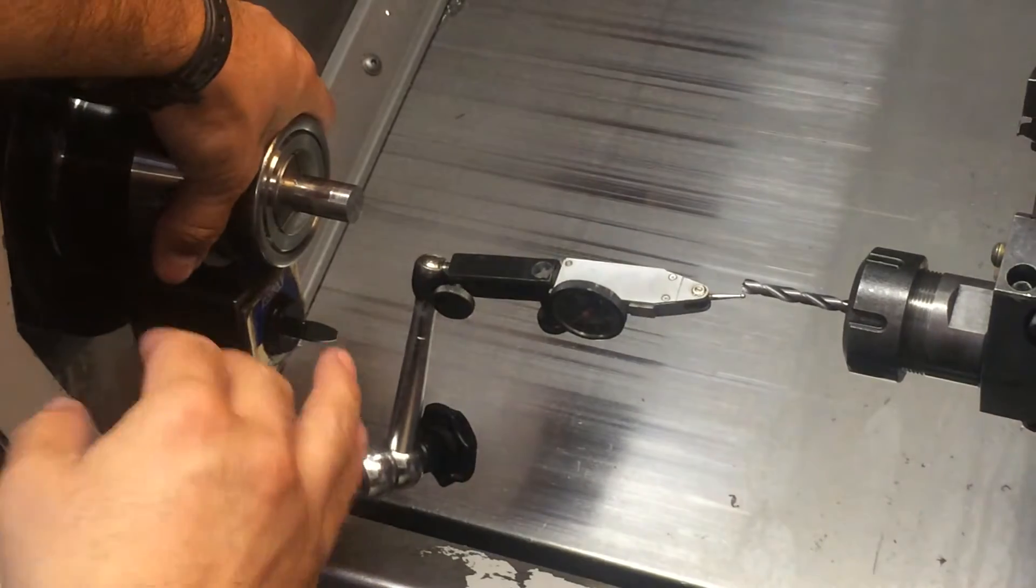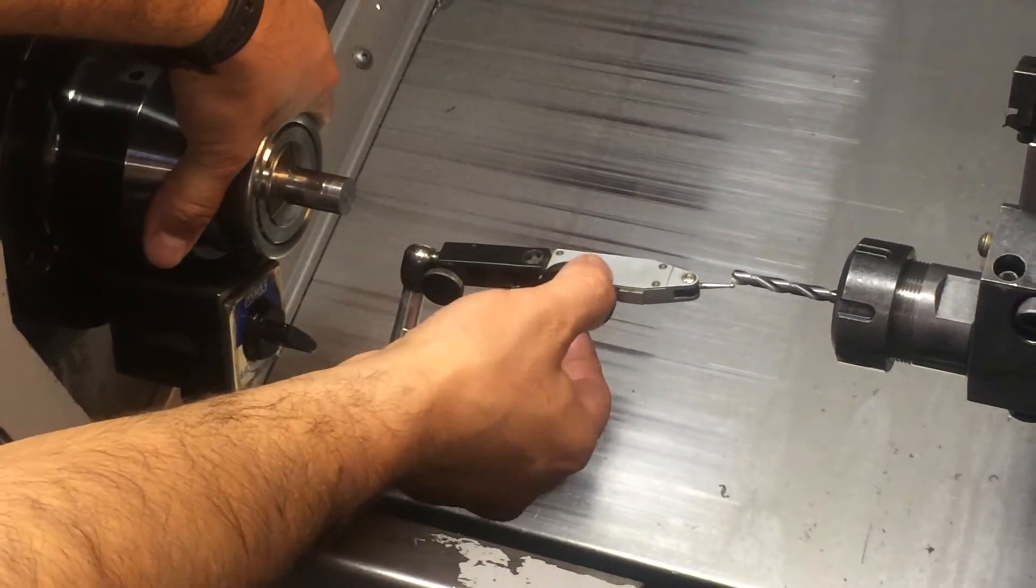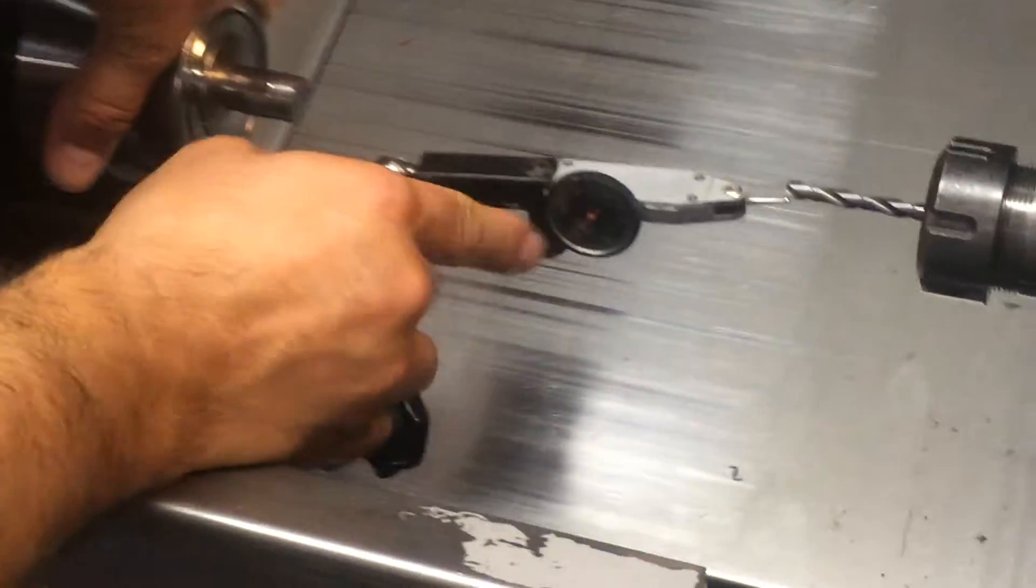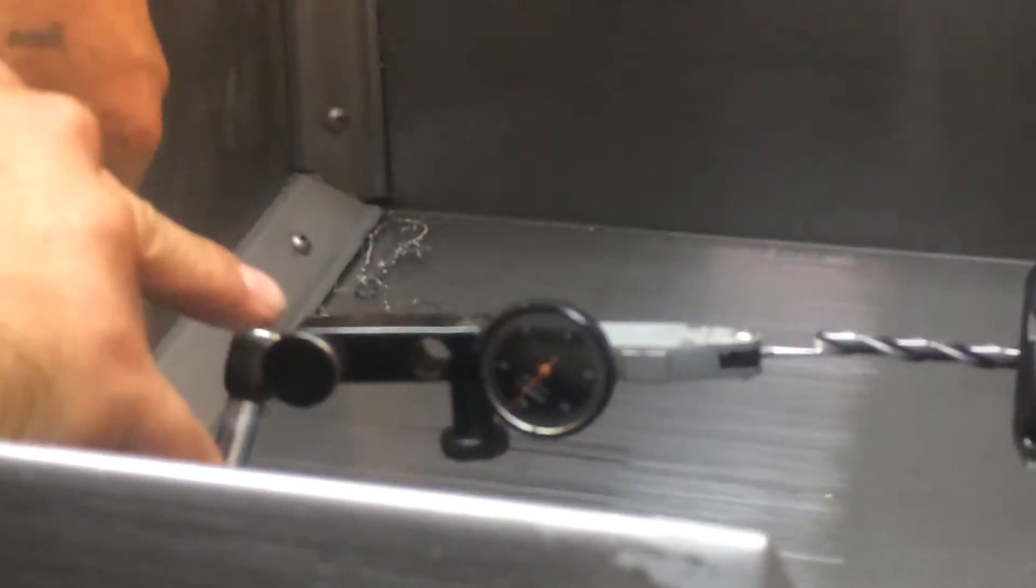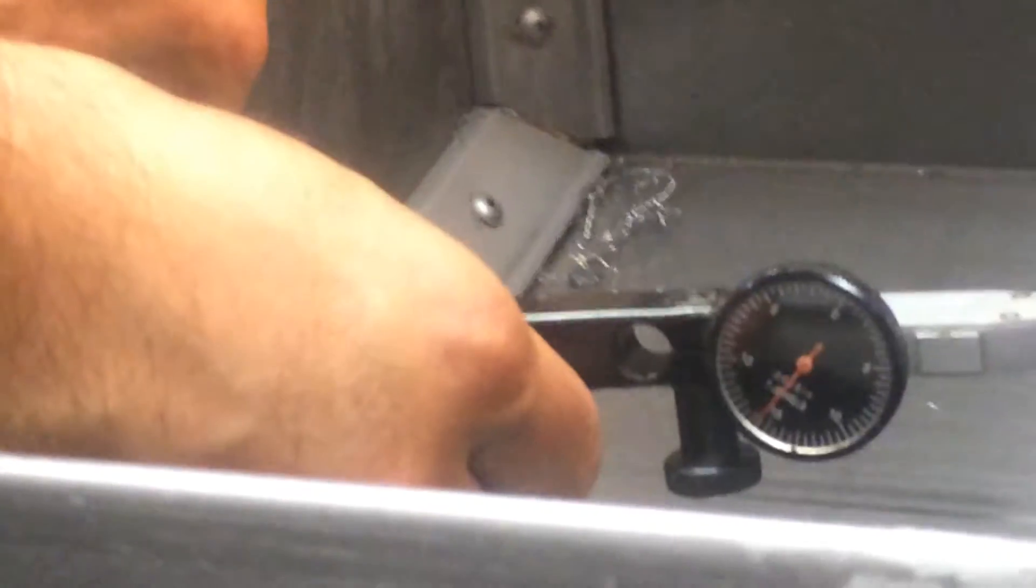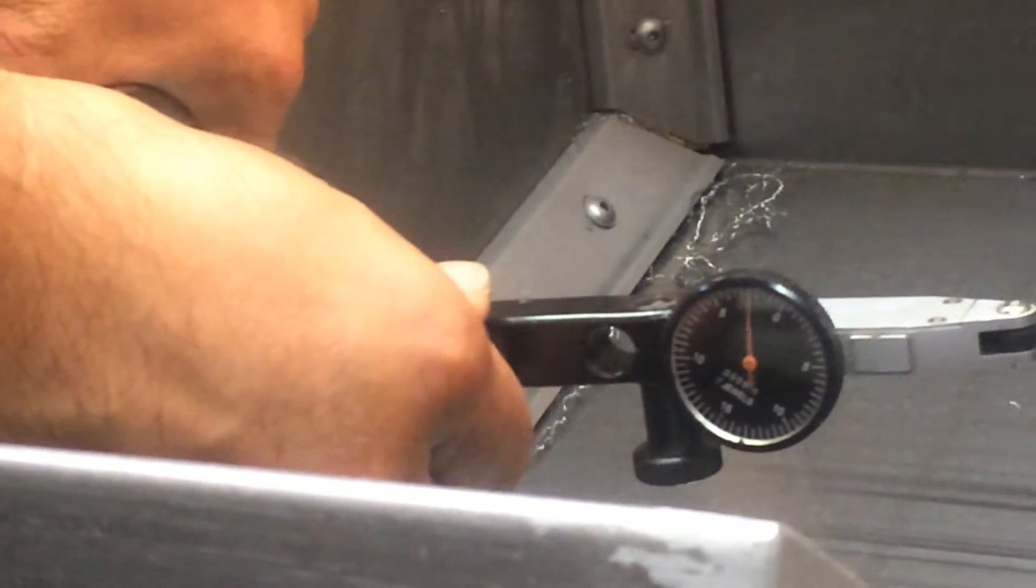Where the previous video left off is where I was saying that the indicator is set at the 15 mark. So right now the indicator is not touching. And as I use my adjuster knob, as I move it into the drill, you can see how that needle starts to move.